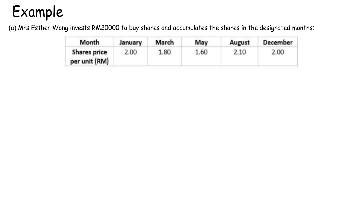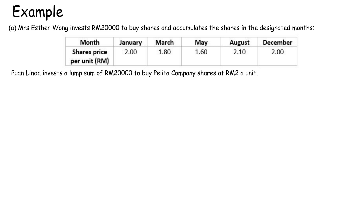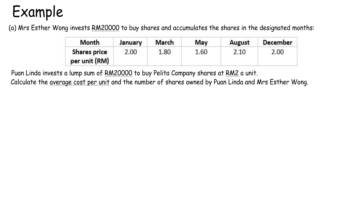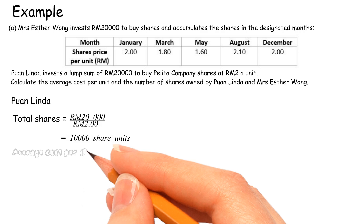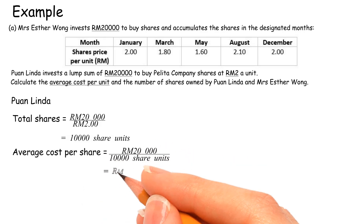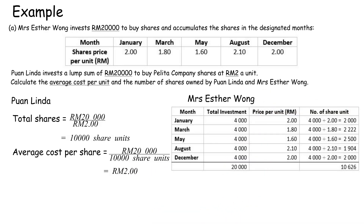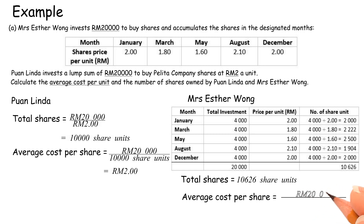Example A: Mrs. Esther Wong invests RM20,000 to buy shares using cost averaging across designated months. Puan Linda invests a lump sum of RM20,000 to buy Paylita Company shares at RM2 a unit. For Puan Linda: total shares equals RM20,000 divided by RM2, equals 10,000 share units. Average cost per share equals RM20,000 divided by 10,000 units, equals RM2. For Mrs. Esther Wong: total shares equals 10,626 share units. Average cost per share equals RM20,000 divided by 10,626 units, equals RM1.88.